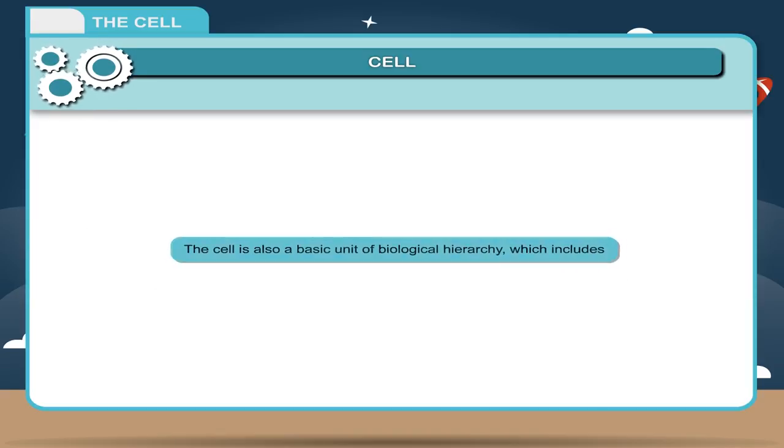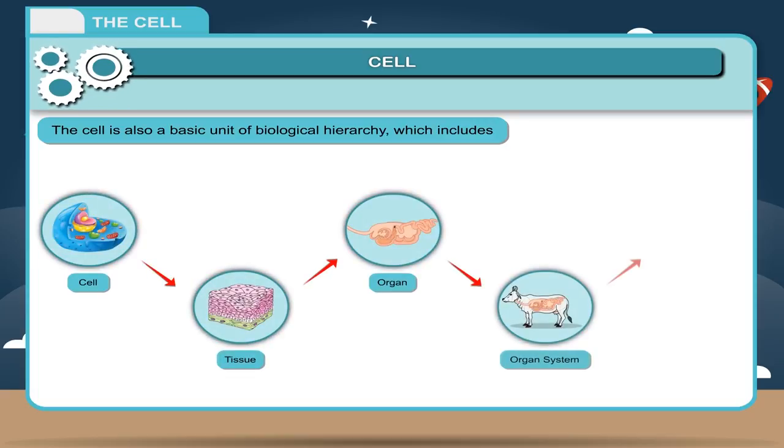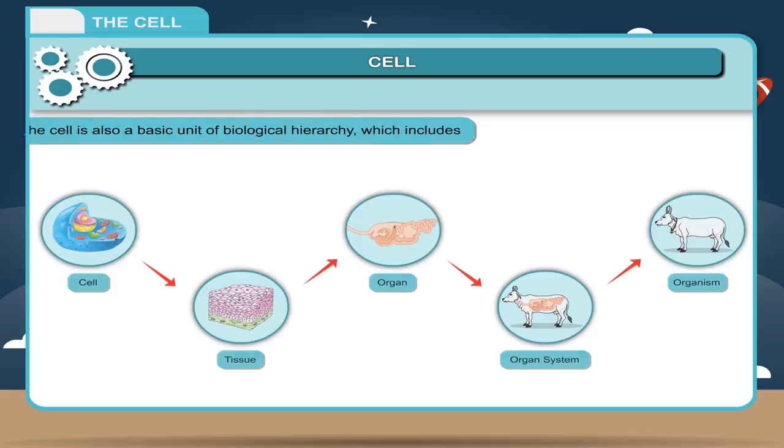The cell is also a basic unit of biological hierarchy, which includes cell, tissue, organ, organ system, and organism.